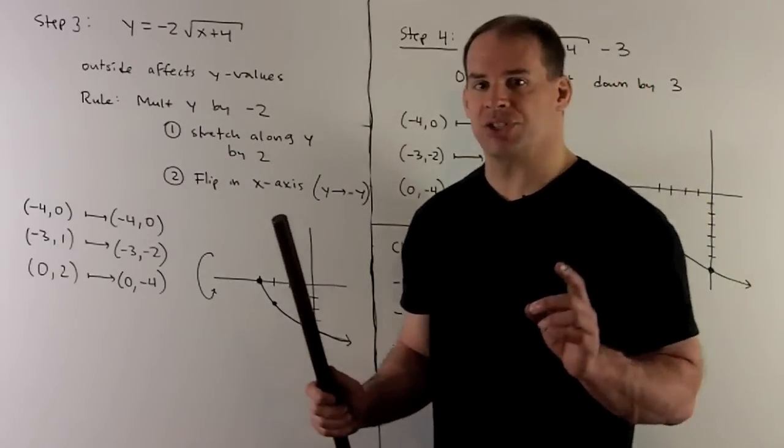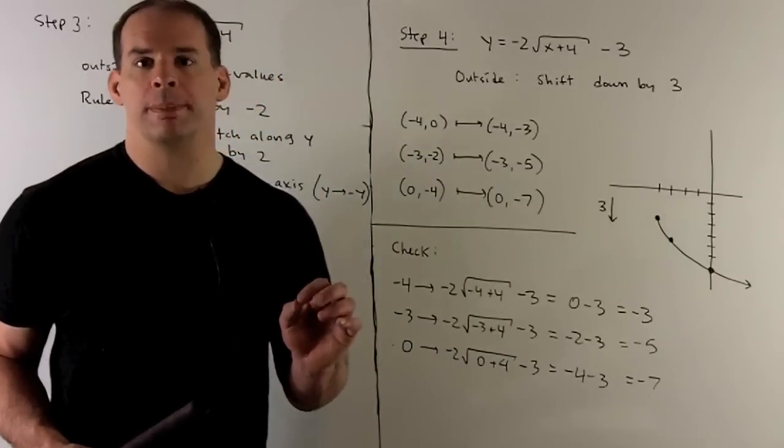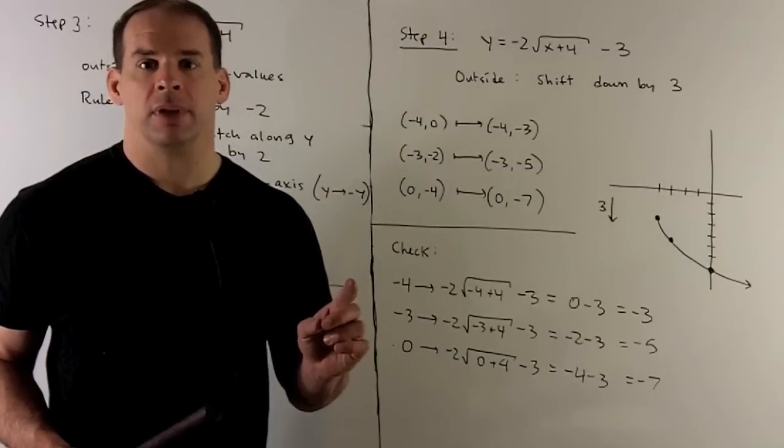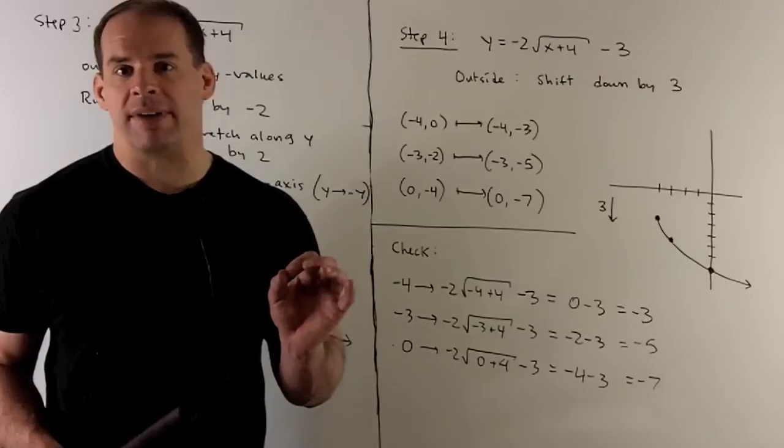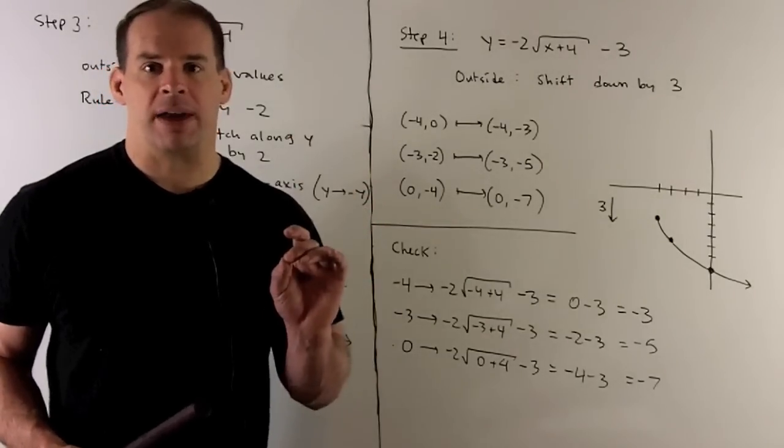Okay, final step. We're going to take our graph of minus 2 square root of x plus 4, subtract off 3. Again, since we're affecting the y values, you do what you would think. So here, we're just going to take our graph, shift it down by 3.